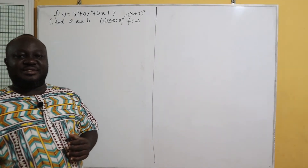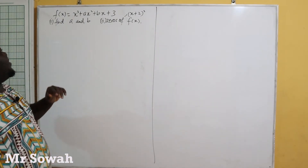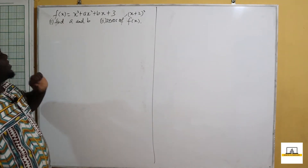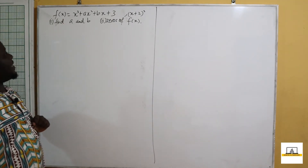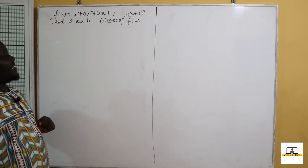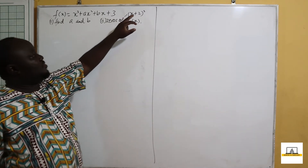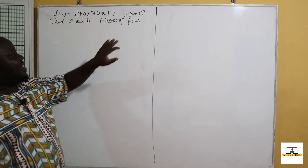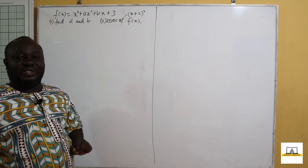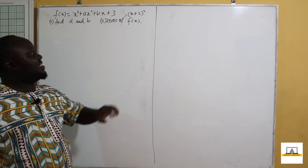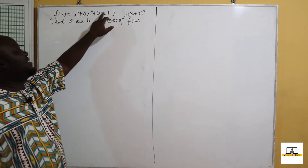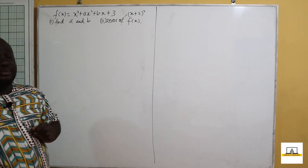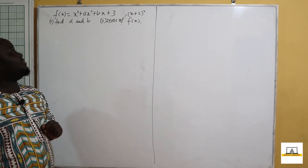We have a question at hand and we are asked to find the values of a and b if f of x is equal to x cubed plus ax squared plus bx plus 3, and then x plus 2 all squared leaves a remainder of 0. So if x plus 2 all squared leaves a remainder of 0, it means x plus 2 all squared is a factor of this polynomial f of x which is equal to x cubed plus ax squared plus bx plus 3.